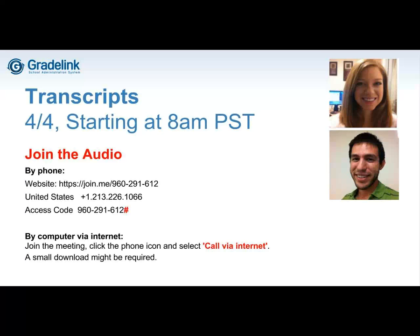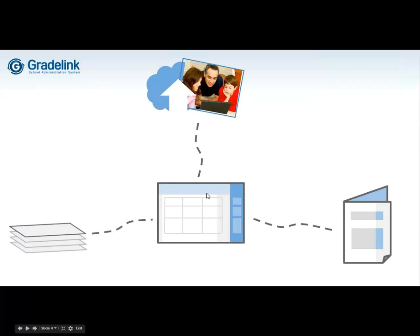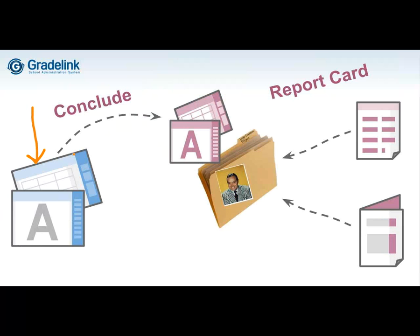Steve, can you explain conceptually how transcripts work in Gradelink? Sure. So I've got a slide here showing how data gets into the transcript. This is just the natural process. Over here we have the teacher's grade books. What happens is the teacher presses a button called Conclude — or an administrator can also press Conclude — which means they are no longer going to change these final grades; they're basically finalizing these records.